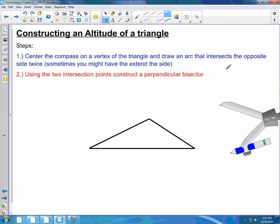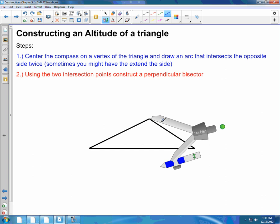Step two: using the intersection points, construct a perpendicular bisector. I'm going to focus on this vertex and I'm going to make sure that my compass is going to open up over past the side, because that's going to guarantee an arc that's going to cross it twice.